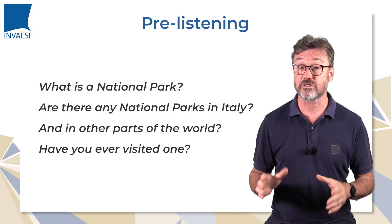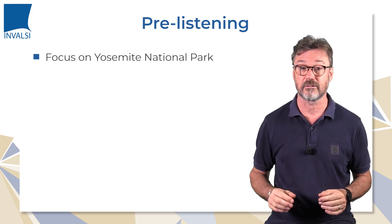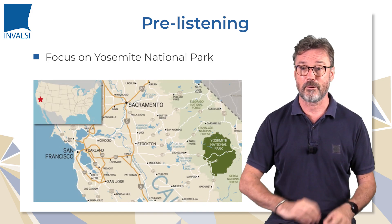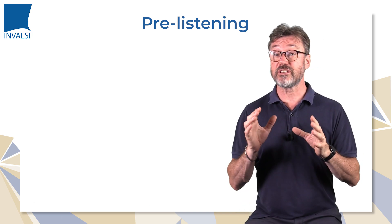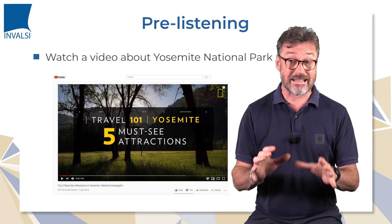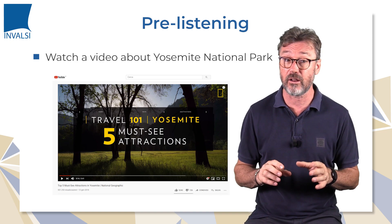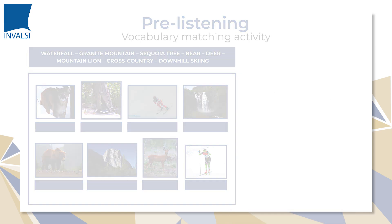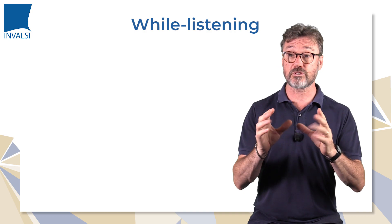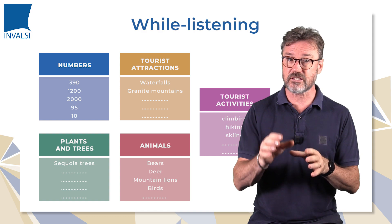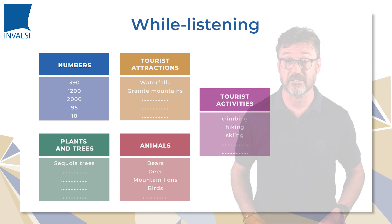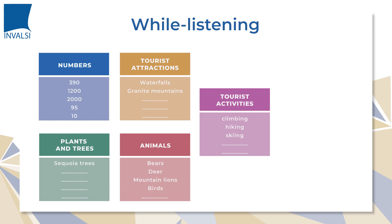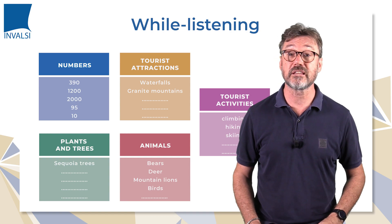Now that we've introduced the topic in general terms, we can focus on Yosemite National Park by showing the location of the park on a map. Then, in order to restrict the area of our pre-listening work, we're going to watch a video about this American national park. As some words of the video are the same as in the sound file, we're going to introduce a vocabulary matching activity that you can find by clicking on the link below. Let's now listen to the sound file and support students with a while-listening activity which focuses on information items divided into categories. You can pause the video and click on the links below to download the materials.